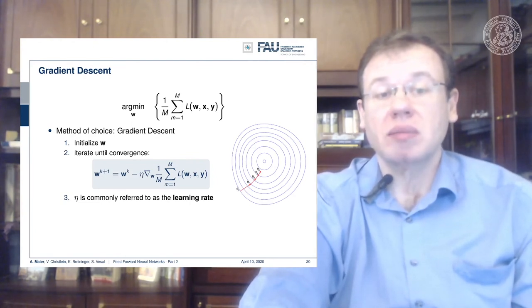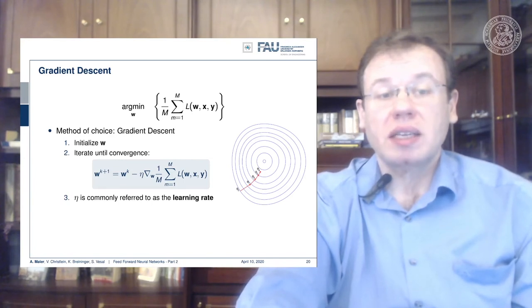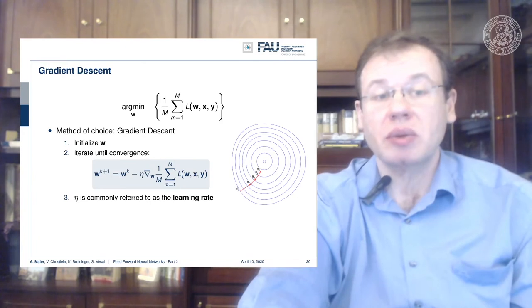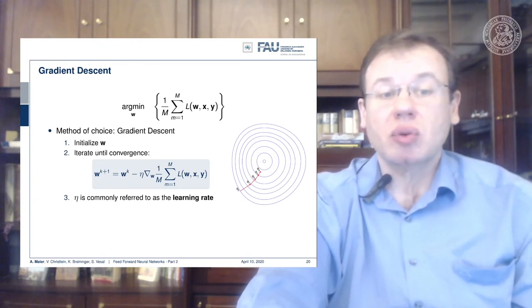Then you do gradient descent - you follow the negative gradient direction step by step until you achieve some minimum. Here you can see the initialized w in step one, maybe randomly.